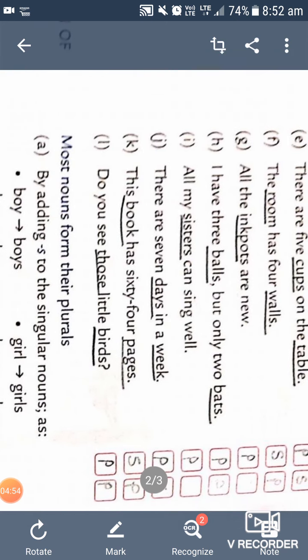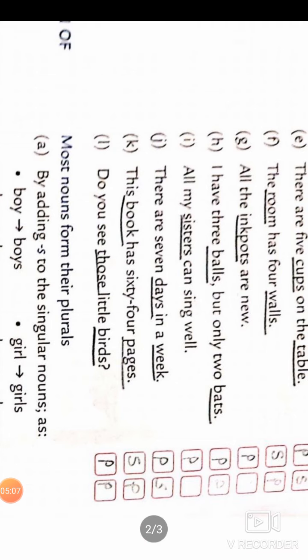All the ink pots are new. Ink pots - only one noun in this question, it's plural, so write only P, the next box will be blank. I have three balls but only two bats. Balls and bats, both are plural, so write P and P.